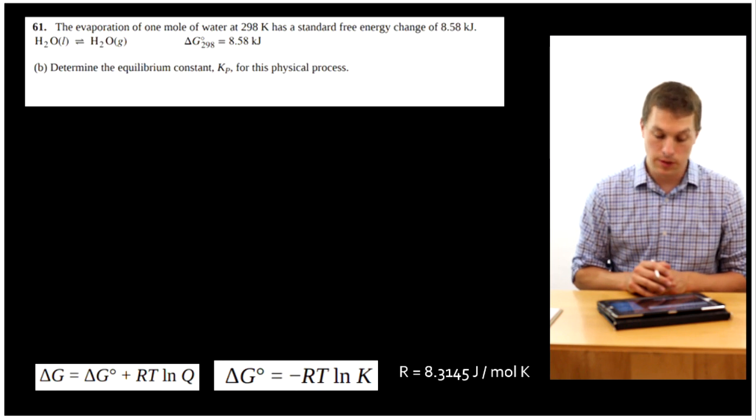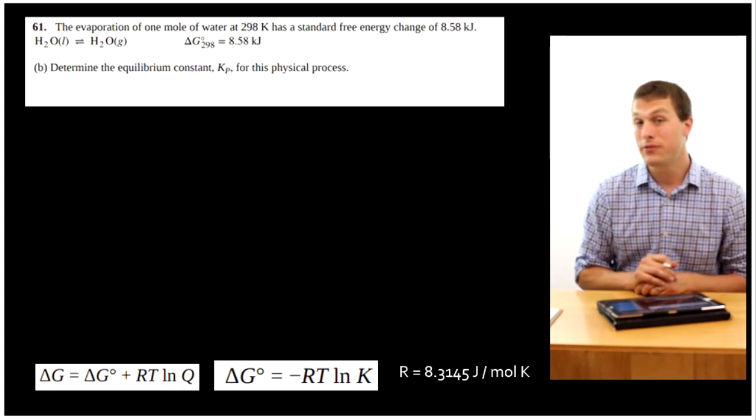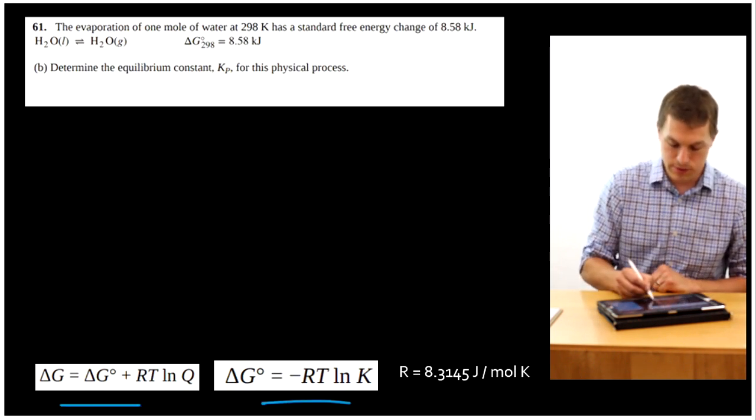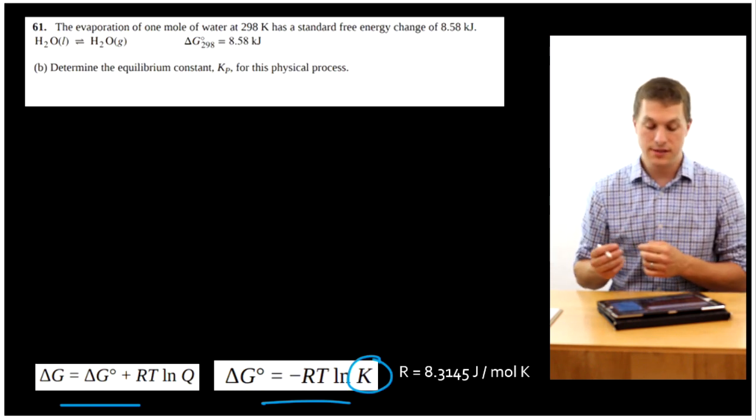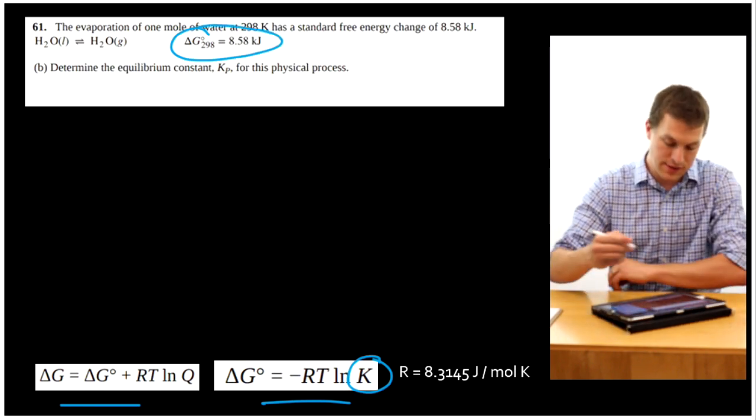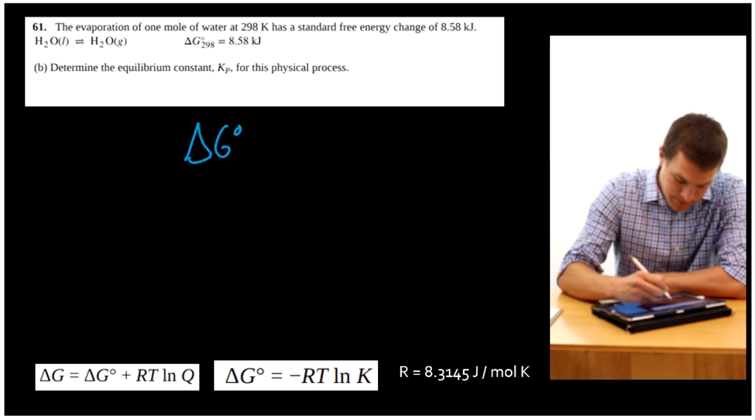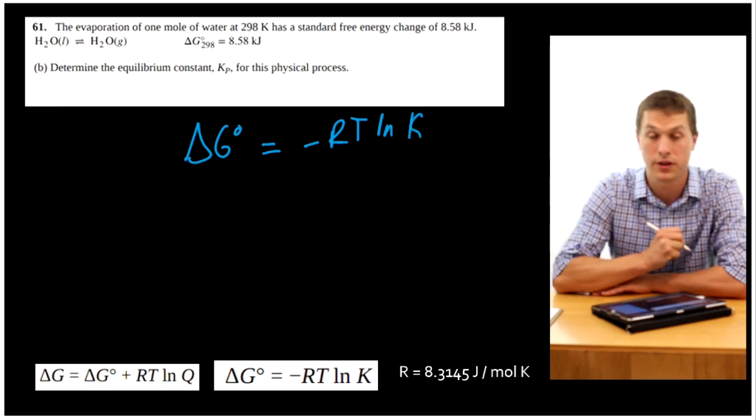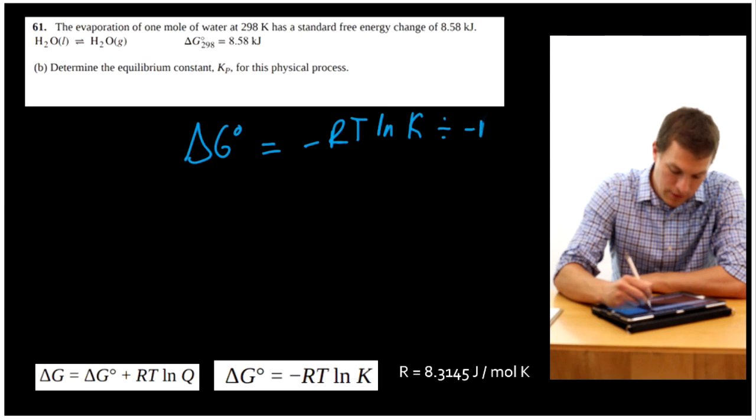This one says, determine the equilibrium constant Kp for this process. All right, so if we're looking for the equilibrium constant, we have to decide which one of our equations do we want to use. Well, this one's got K in it, so we're going to use that. And because we have delta G for our standard state, we can determine what the equilibrium constant is. All right, all we do is we write down our equation, delta G equals negative RT ln K. We want to solve for K, so we'll do some algebra. We're going to go ahead and divide both sides by negative RT.